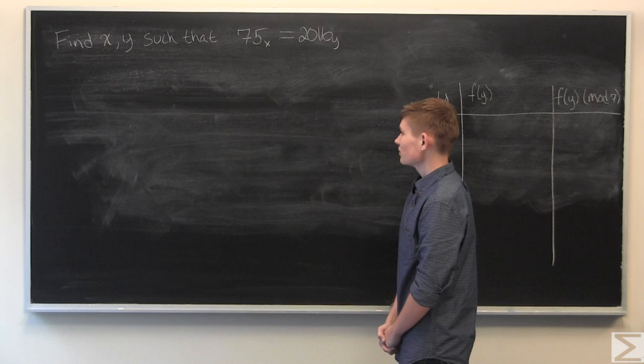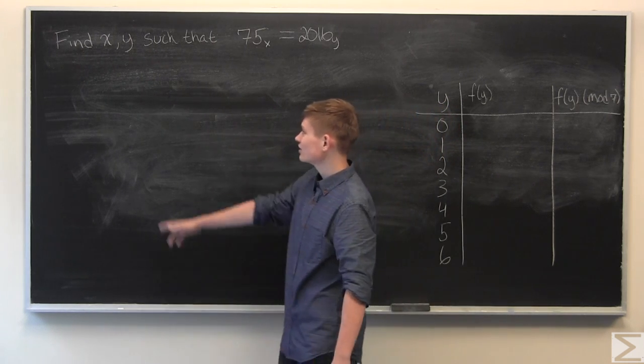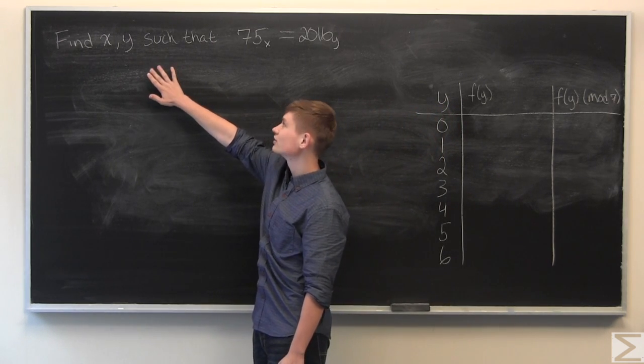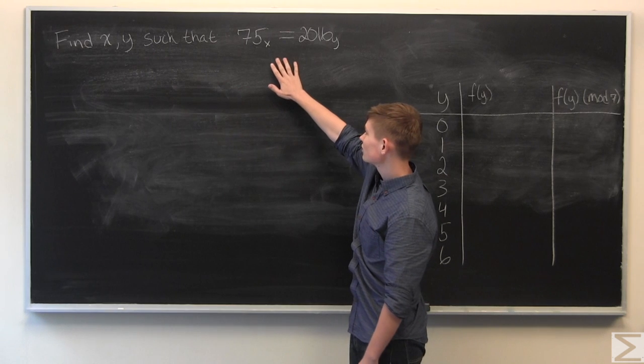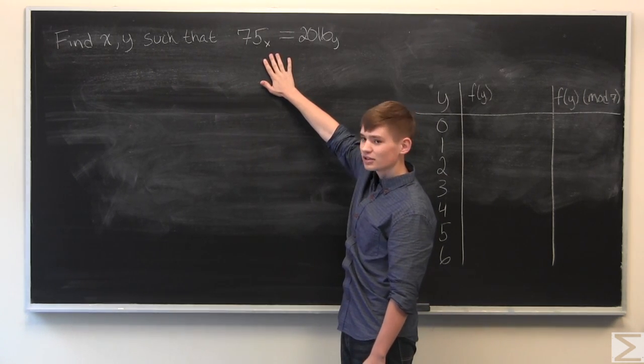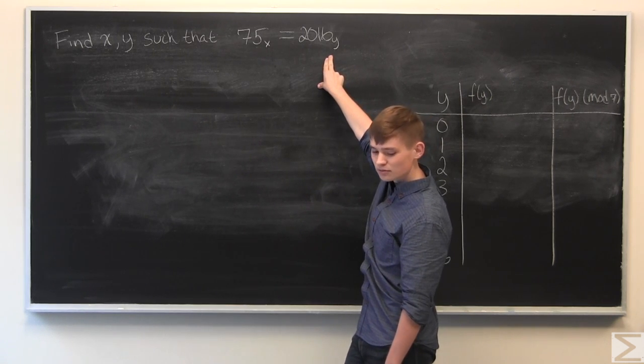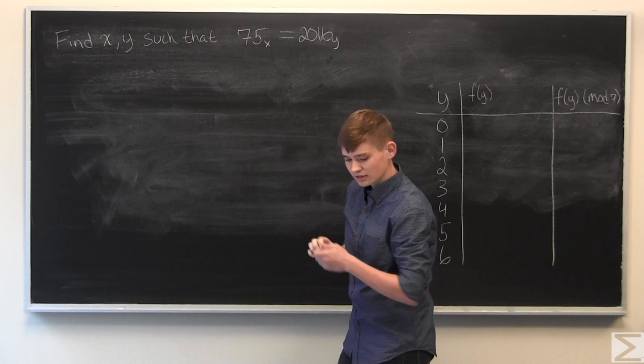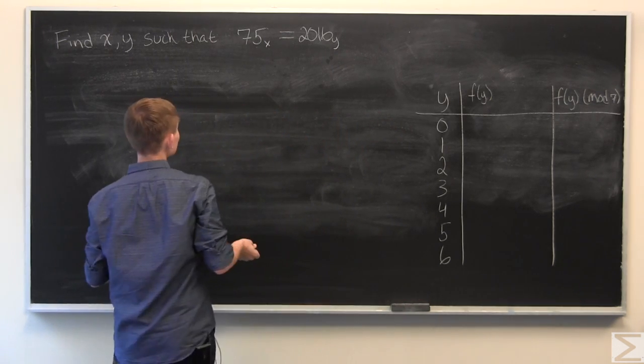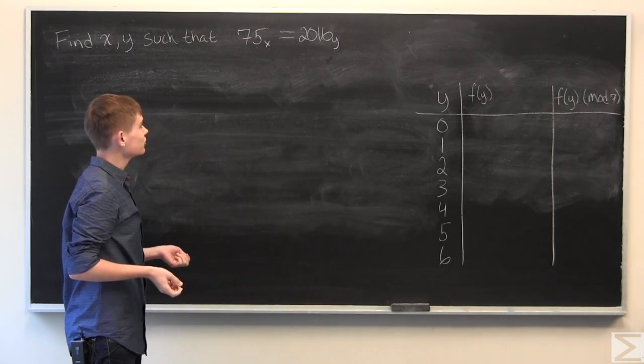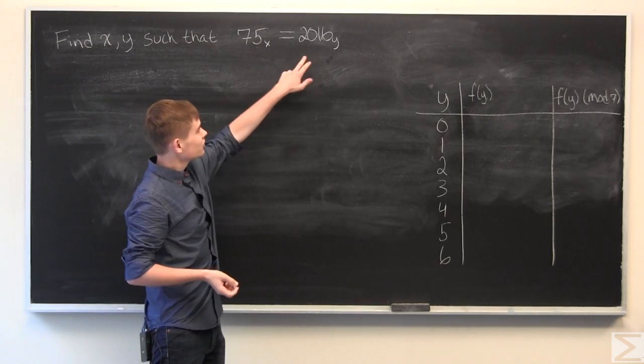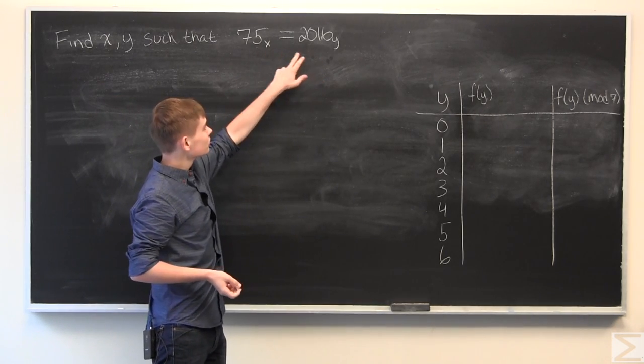So this week's Advanced Knowledge Problem of the Week was find x and y such that 75 to the base x is equal to 2016 to the base y. To begin this, the best way to start is to write out polynomials for these two expressions.